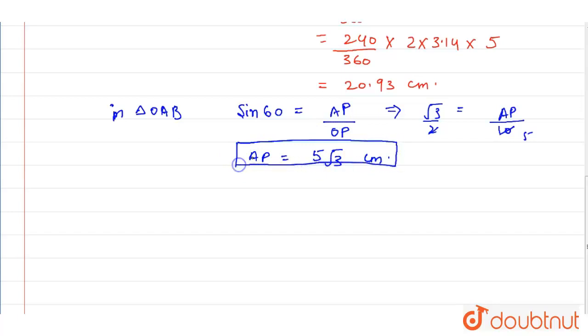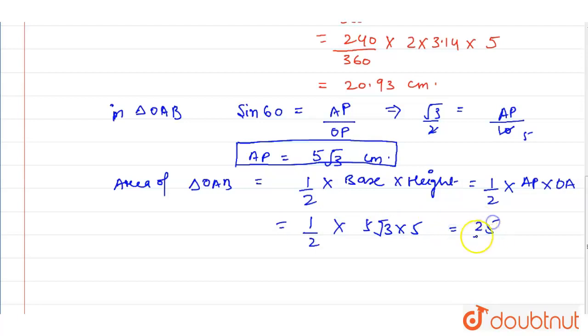Now we can calculate the area of triangle with the help of these dimensions. Area of triangle OAB is equals to half of base into height, we know this formula. Now base is AP and height is OA, so this will be half of 5 root 3 into 5.